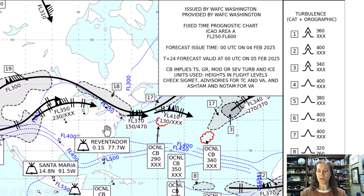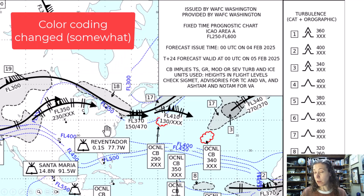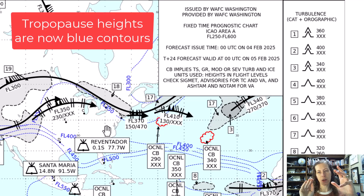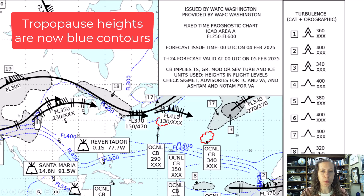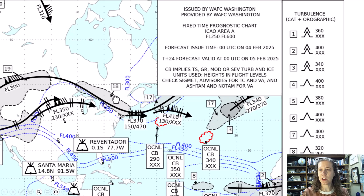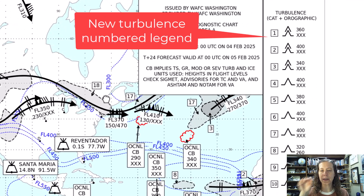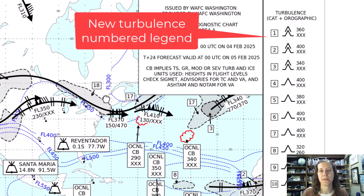The big change you might notice on this chart is that the colors have changed. They have eliminated the small individual areas of tropopause heights, but they have added contours for the tropopause. They've also added a numbered area list on the side to describe turbulent areas — I think there were too many things on the old chart and people couldn't read them.